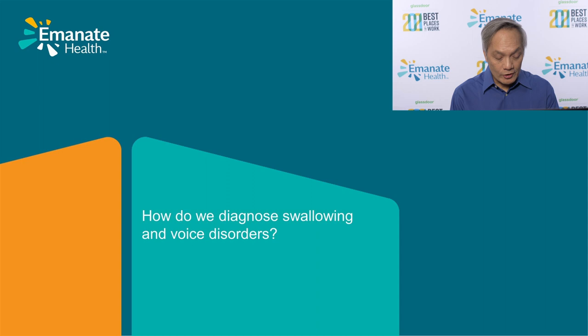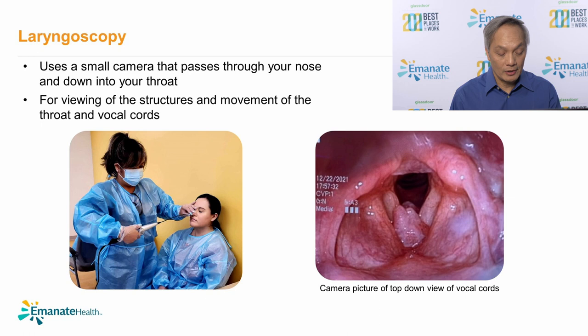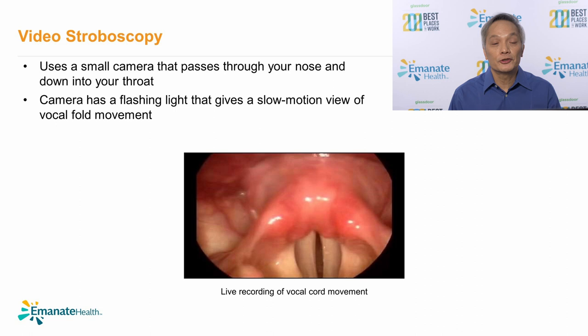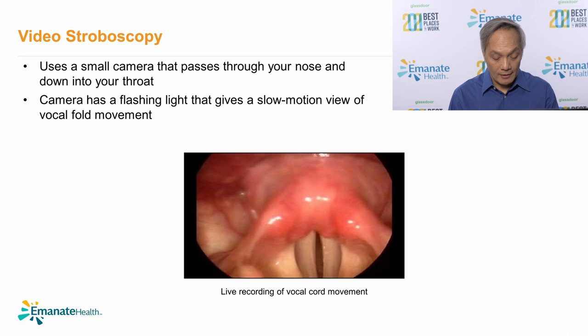We assess voice and swallowing problems first with a thorough head and neck exam. Based on patient symptoms, we may perform one of the following tests. A laryngoscopy is an endoscopic procedure where a flexible tube containing a light and camera is inserted through your nose and down to your throat, allowing us to view structures in your throat and the movement of your vocal cords. Video stroboscopy is similar to a laryngoscopy, but the camera uses a flashing light to capture a slow-motion view of your vocal folds. The video results are recorded and used to evaluate your progress during treatment.